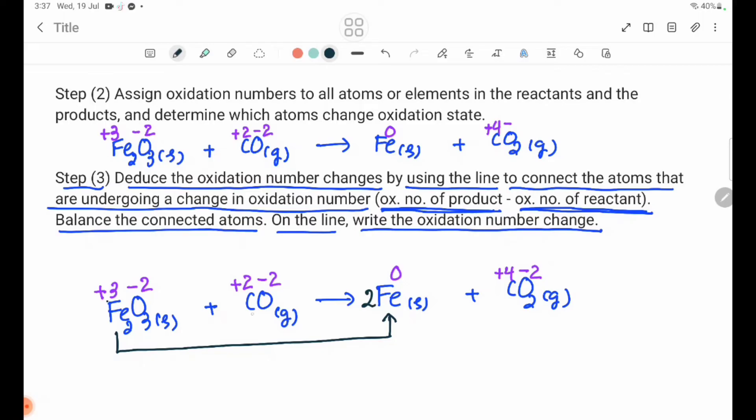Change in oxidation number: 0 minus plus 3 equals minus 3. Changed minus 3, that would be this change in oxidation together, minus 3.